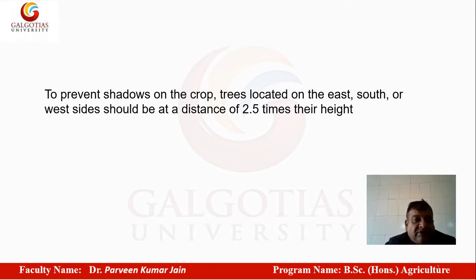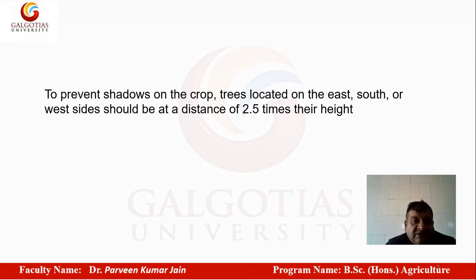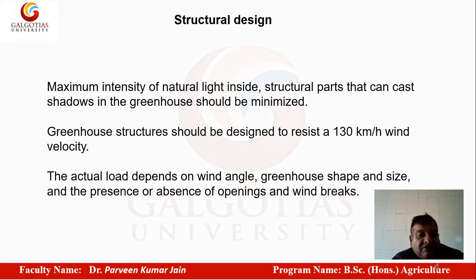To prevent shadow on the crop, trees located on the east, south, or west side should be at a distance of 2.5 times their height. There should not be any trees in the nearby area as far as your greenhouse is concerned.